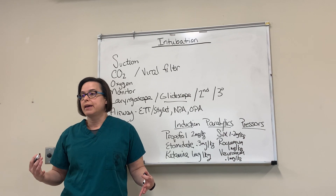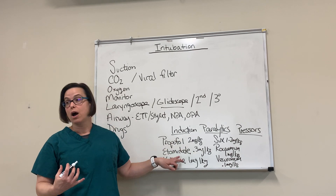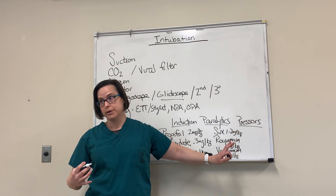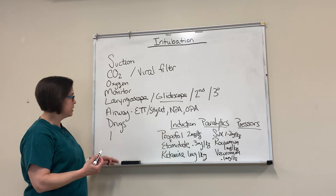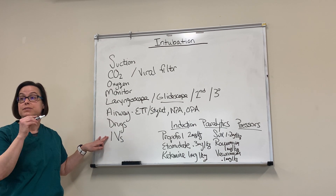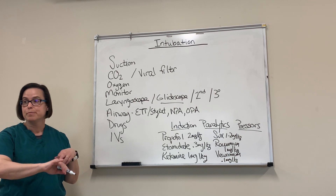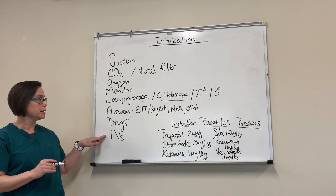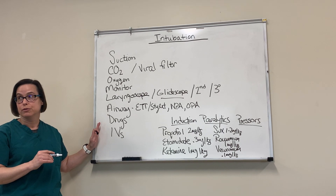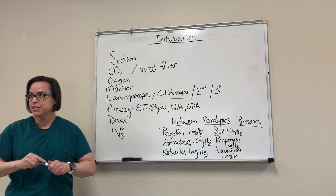For pressors: when you intubate someone, you're taking away all the adrenaline they're using to keep breathing and giving them drugs that cause low blood pressure. Have phenylephrine or norepinephrine ready to go before you even start. Pick one from each category — induction agent, paralytic, pressor — and make sure your IV is free-flowing with a bag of fluid ready. Don't rely on a small 22-gauge IV that's been in place for a week. Also, think about taking as few people in the room as possible.